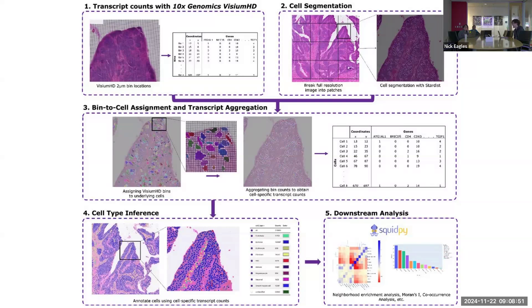The first real step in this pipeline is cell segmentation. Like many segmentation techniques, they break the image up into patches, and then they use StarDist — which I'll compare to another paper called BinToCell that does some of the same stuff. BinToCell also uses StarDist, so it's interesting they're both using this unit-based machine learning approach for segmentation.